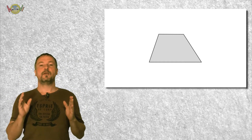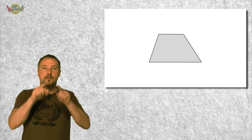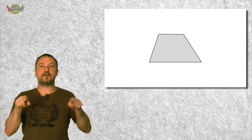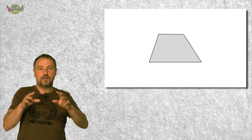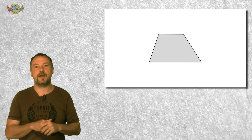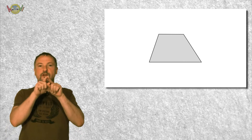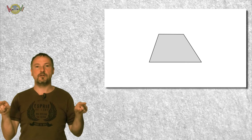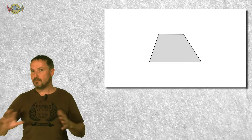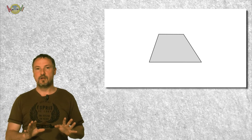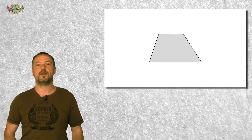If you have a rectangle, all angles are 90 degrees. But on a trapezoid you can see we have two horizontal lines — in our case it can be different, no worries, but in our case it has two horizontal lines.